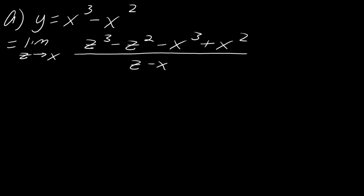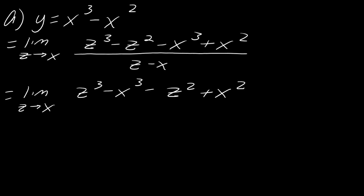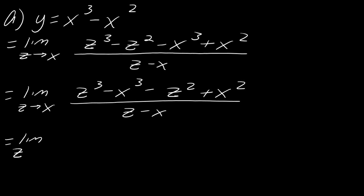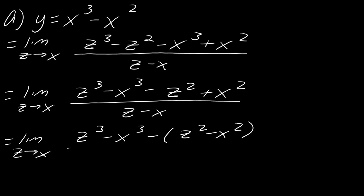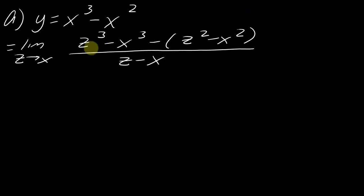Let me show you what I mean. If I take z cubed minus x cubed, and then z squared minus x squared — the question is, can you factor in this way? The answer is yes. First, let me factor out negative one from the second part so it becomes z squared minus x squared. Now you can see: the first part factors as a difference of cubes, and the second part factors as a difference of squares.